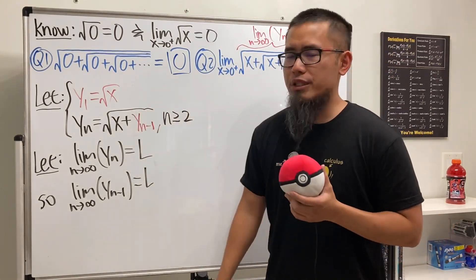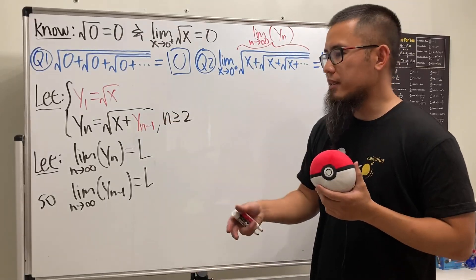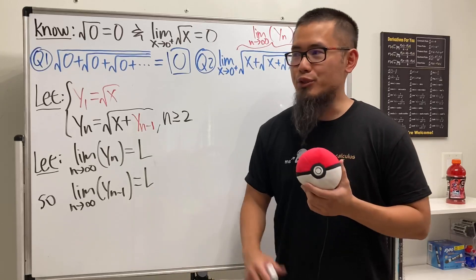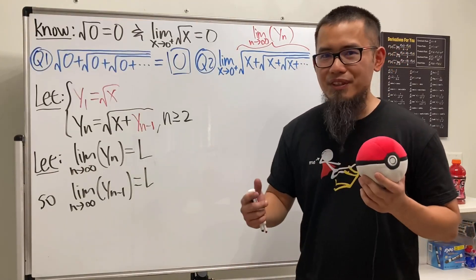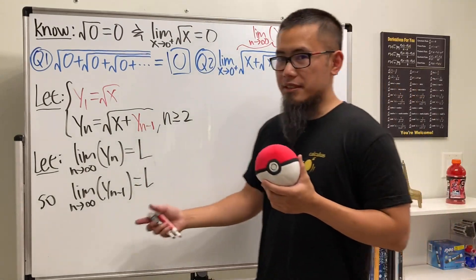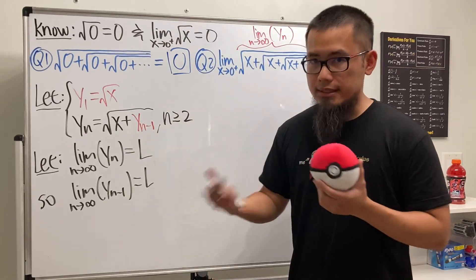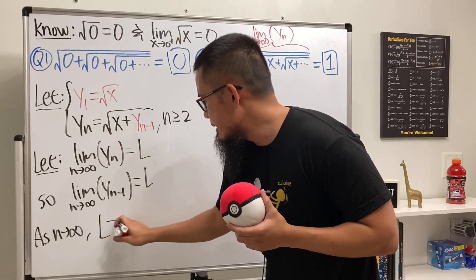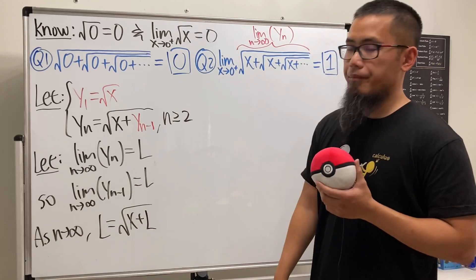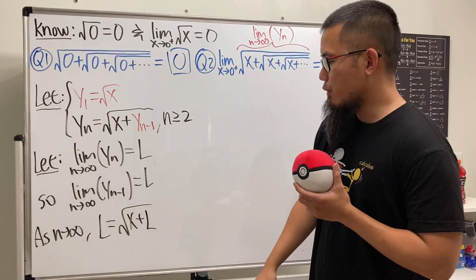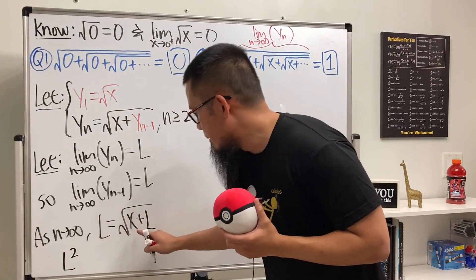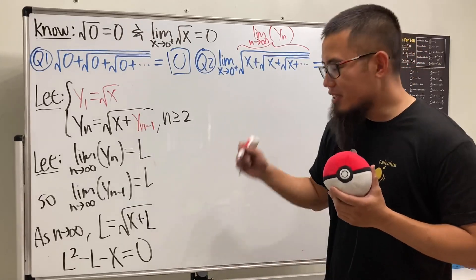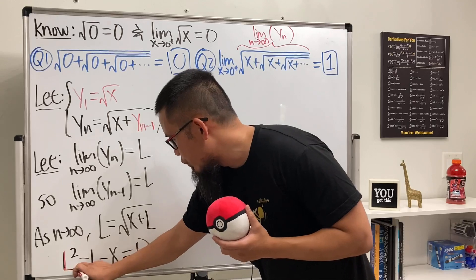You can verify convergence by checking that the sequence is bounded above and monotonically increasing, or by the fixed-point criterion — there's a linked video for that. Trusting convergence, as n → ∞ we must have L = √(x + L). Squaring both sides and rearranging gives L² - L - x = 0, a quadratic equation in L.